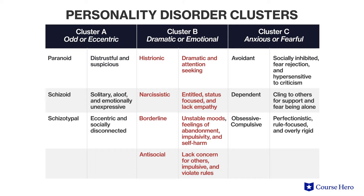Cluster B personality disorders involve dramatic, emotional, or unpredictable behaviors and limited awareness of the impact of those behaviors on others. There are four disorders in this cluster. Histrionic personality disorder is characterized by dramatic and attention-seeking behavior. They're sensitive and easily hurt, but are often unaware of how their behavior is impacting others.